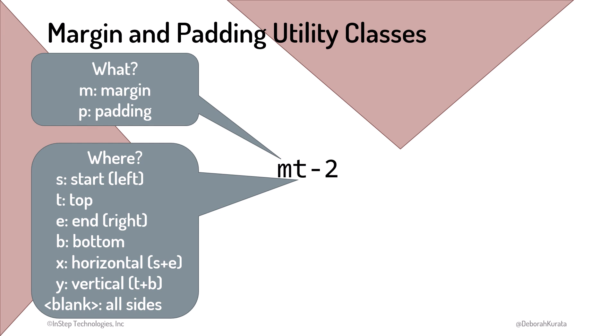To combine values, use X for the horizontal or X-axis, which is start and end. Use Y for the vertical or Y-axis, which is top and bottom. Leaving the second character blank adjusts the margin or padding on all sides.